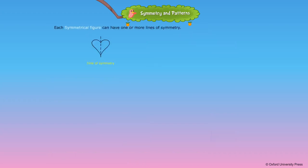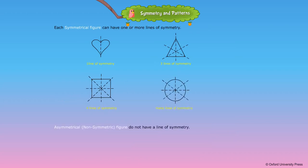Each symmetrical figure can have one or more lines of symmetry. Asymmetrical figures do not have a line of symmetry.